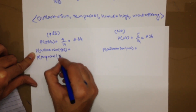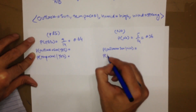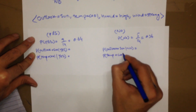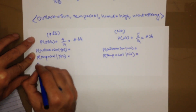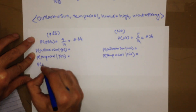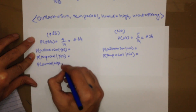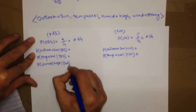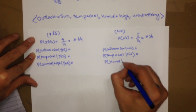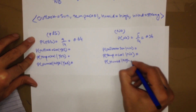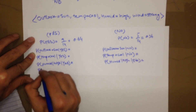We also need to calculate the probability of temperature equal to cool given yes, and temperature equal to cool given no. Then the probability of humidity equal to high given yes and given no, and the probability of wind equal to strong given yes and given no.